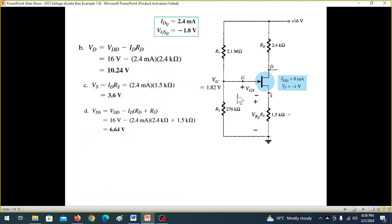And next is VDS. VDS, we can find from this voltage minus this drop and minus this drop. VDD minus IDRD plus RS. The same current is flowing. So VDS is 6.6V.